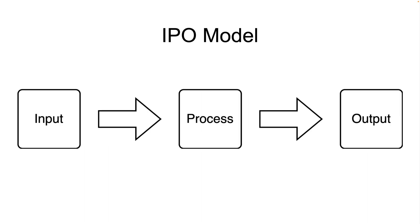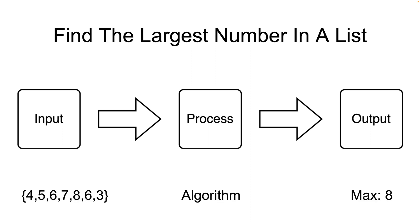One way to look at what computer programs do is called the IPO model, where we have input, some processing of the input, and then some output. What the input, processing, and output are will vary from one problem to the next. If we're trying to find the largest number in a list, the input would be the list itself, the output would be the largest number, and the process would be the algorithm that finds it.